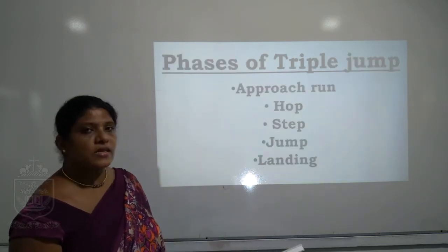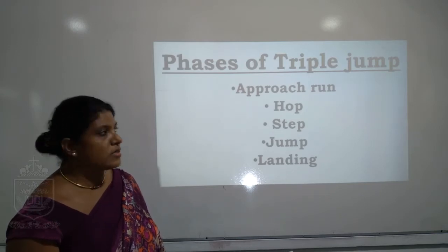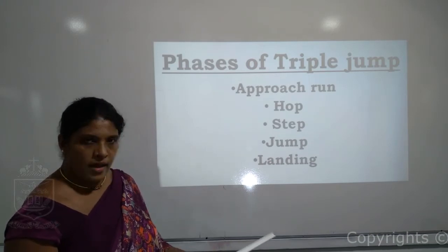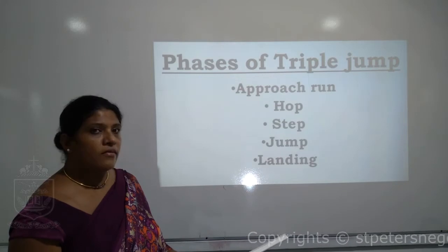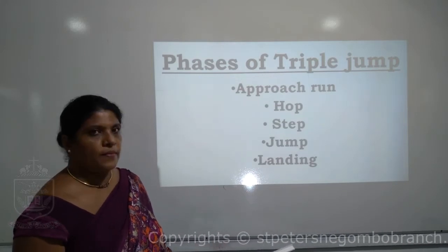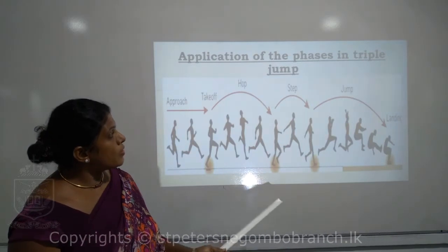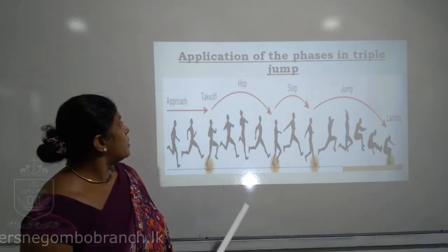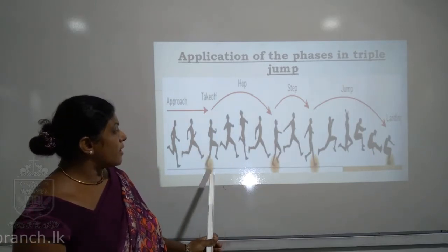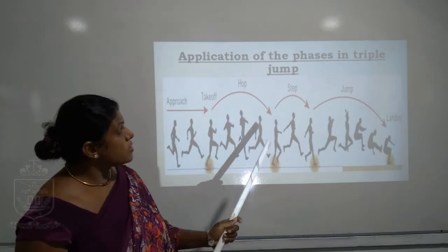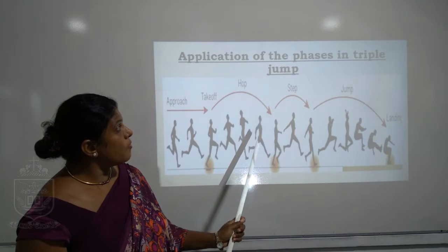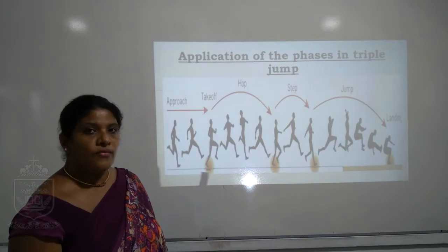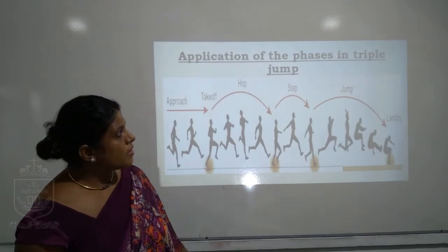There are five phases of triple jump: approach run, hop, step, jump, and landing. Under triple jump, hop, step, and jump are considered the three main steps, but as a whole there are five steps. The final one is the landing.